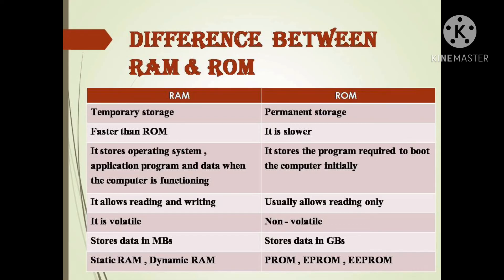RAM is volatile — when power is switched off, all data gets erased. ROM is non-volatile, providing permanent storage. RAM stores data in MBs (megabytes), while ROM stores data in GBs (gigabytes). RAM types include Static RAM and Dynamic RAM; ROM types include PROM, EPROM, and EEPROM.